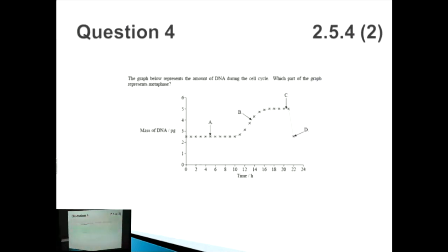Let's look at this last one. The graph below represents the amount of DNA during the cell cycle. Which part of the graph represents metaphase? So we've got this amount of DNA. Don't worry about this complicated title over here, essentially just talking about the amount of DNA.